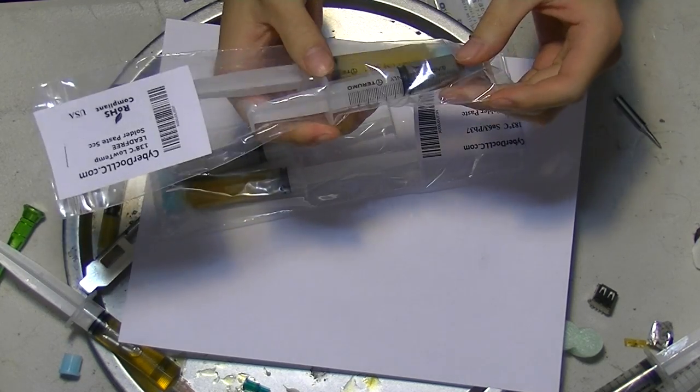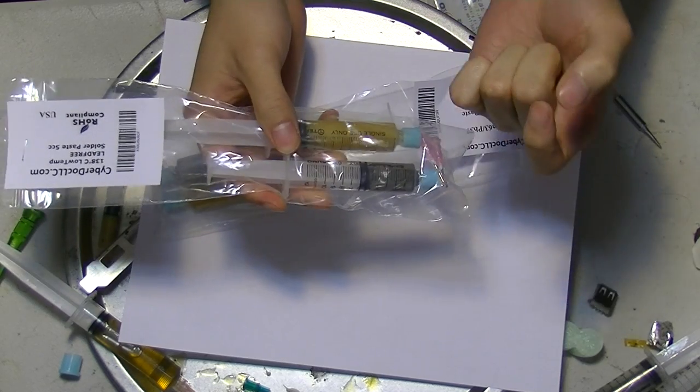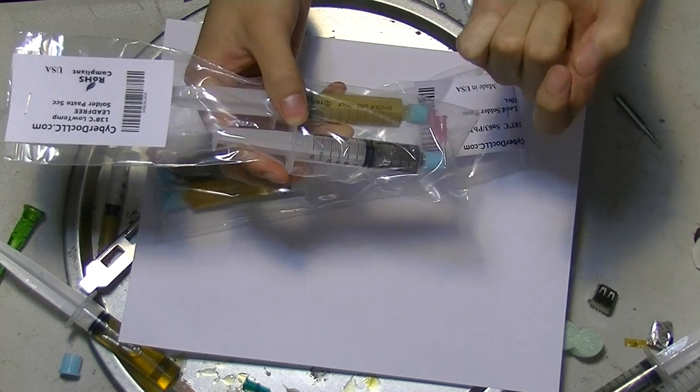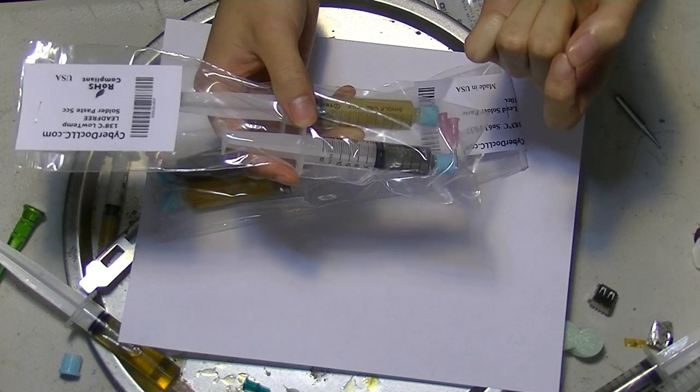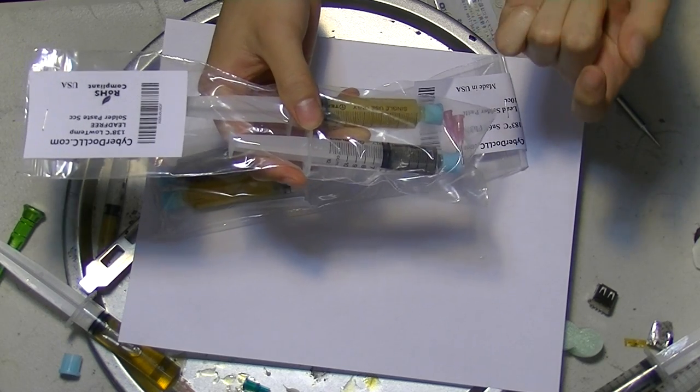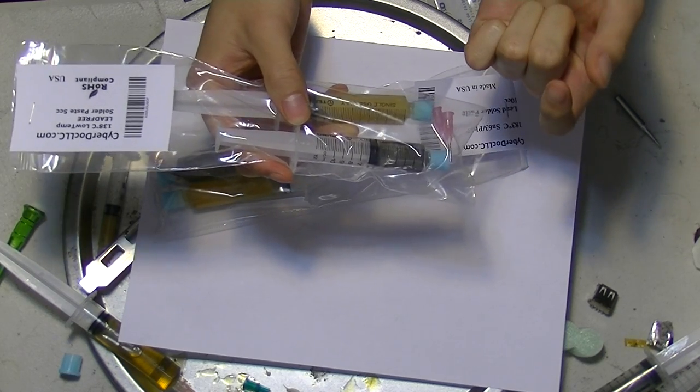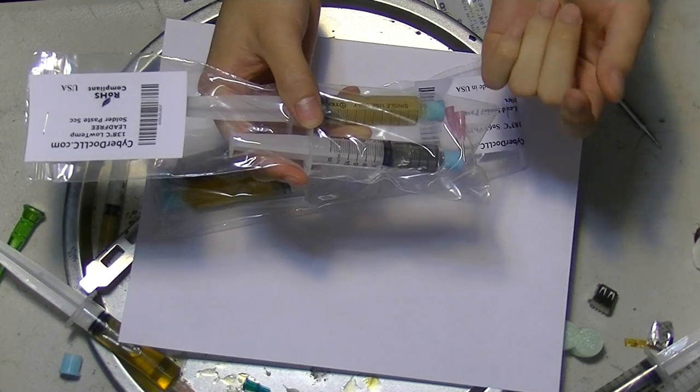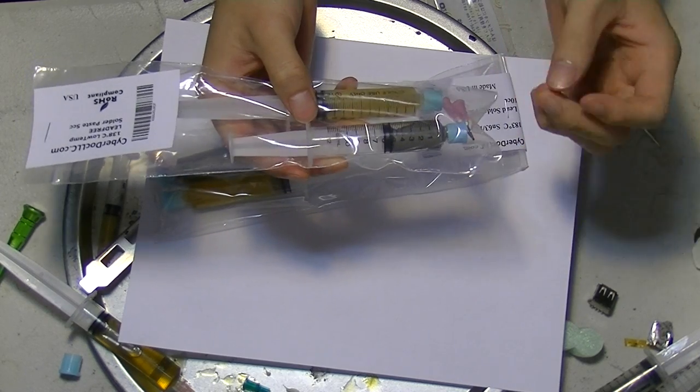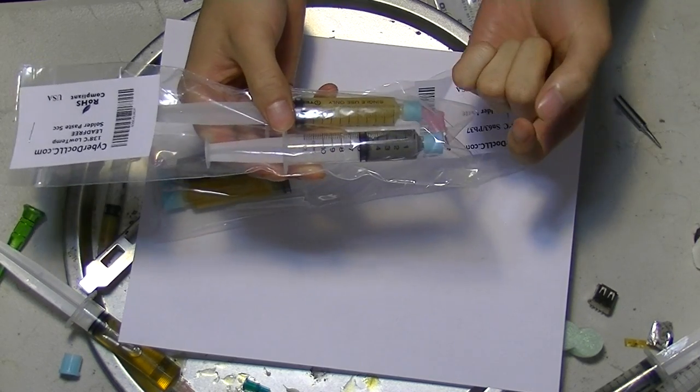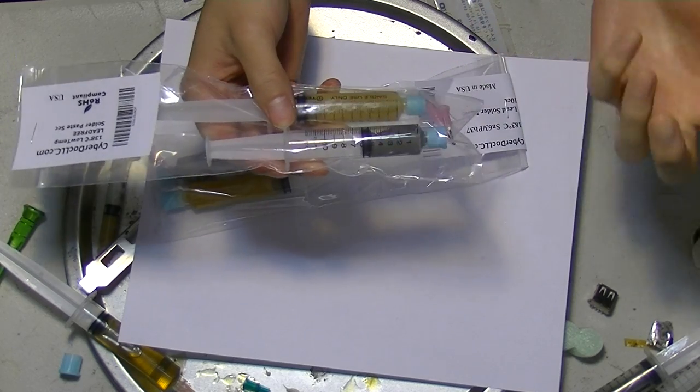What solder paste is, is really teeny little, about 20 to 10 micron size solder balls. A micron is about the size of E. coli bacteria, but 20 to 10 micron size solder ball mixed in flux.